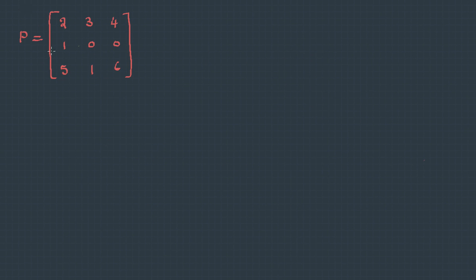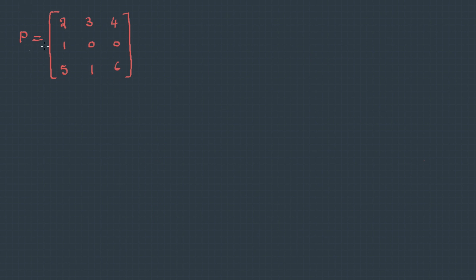Let's try to solve one example. Here we have a matrix P with elements 2, 3, 4, 1, 0, 0, 5, 1, 6. Let's find the determinant for this. Determinant of P will be, I have a choice to pick up any row, so let me take the first row itself.